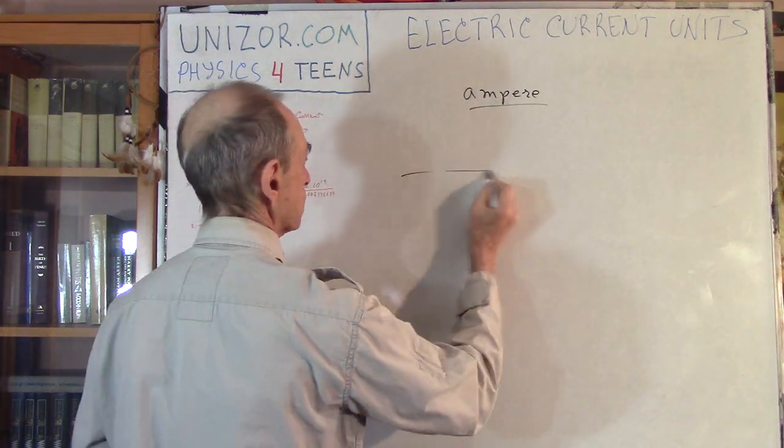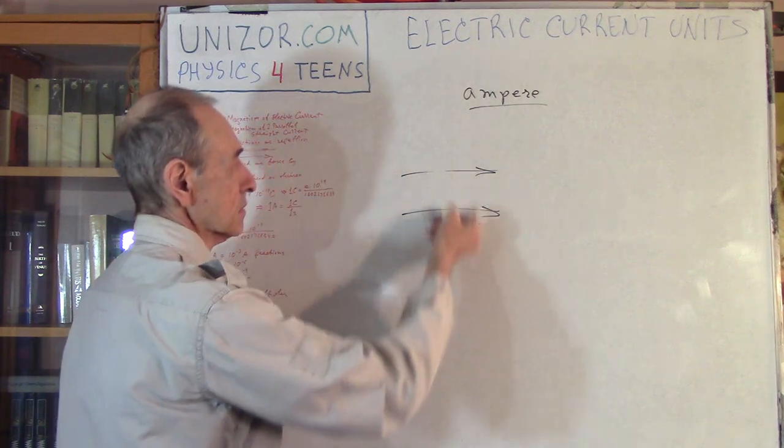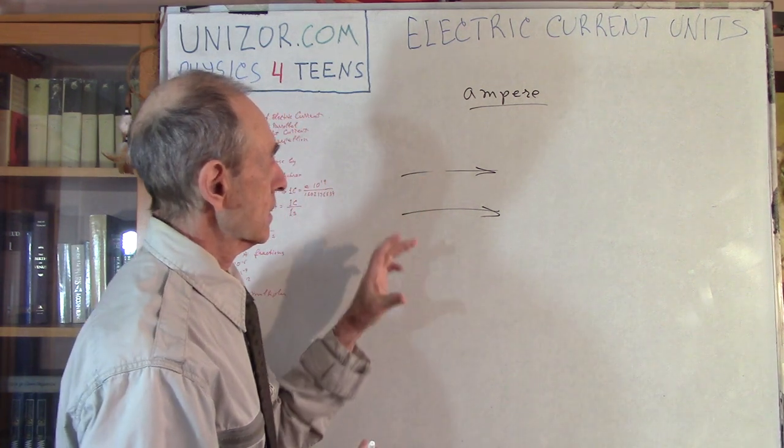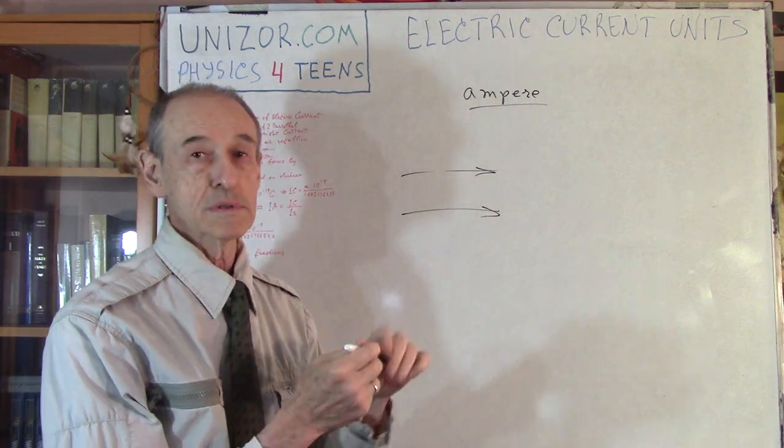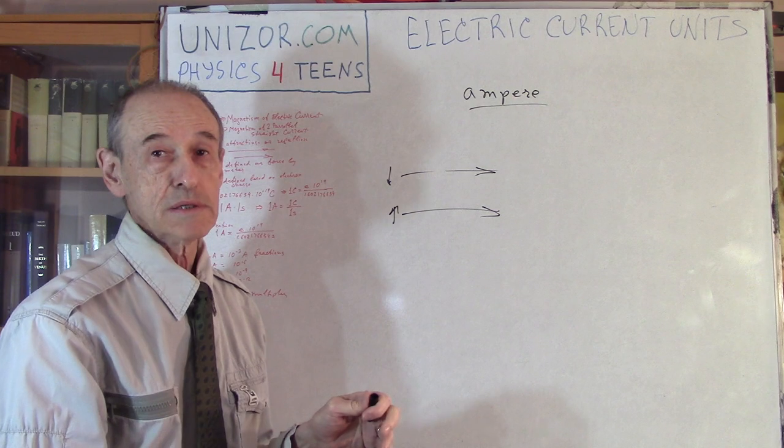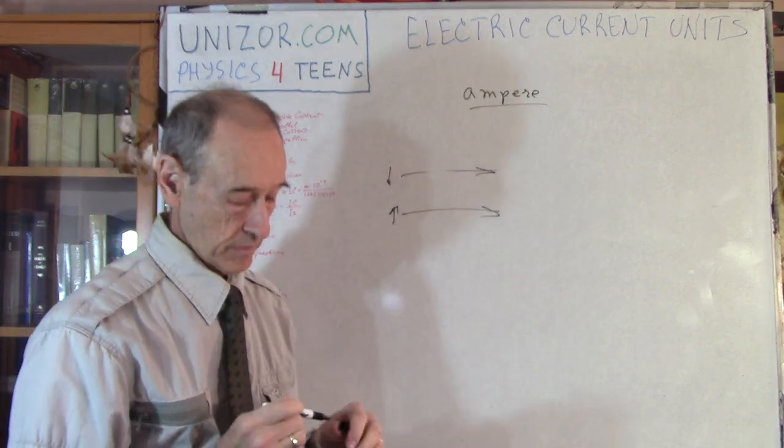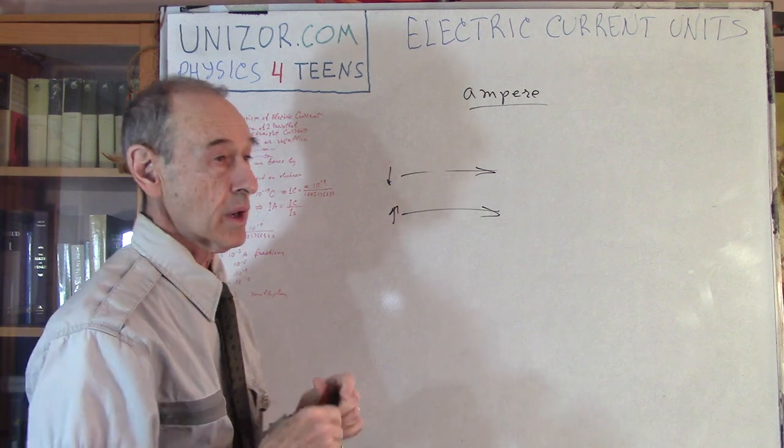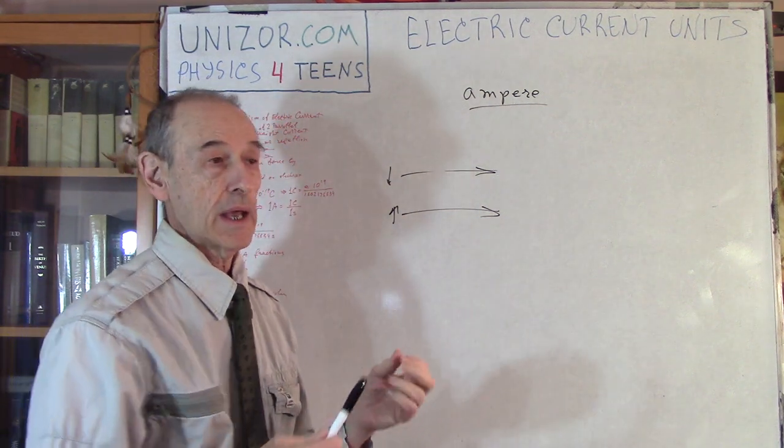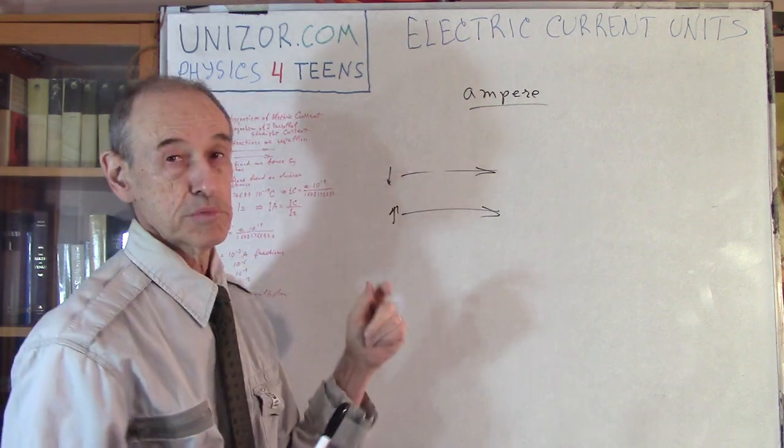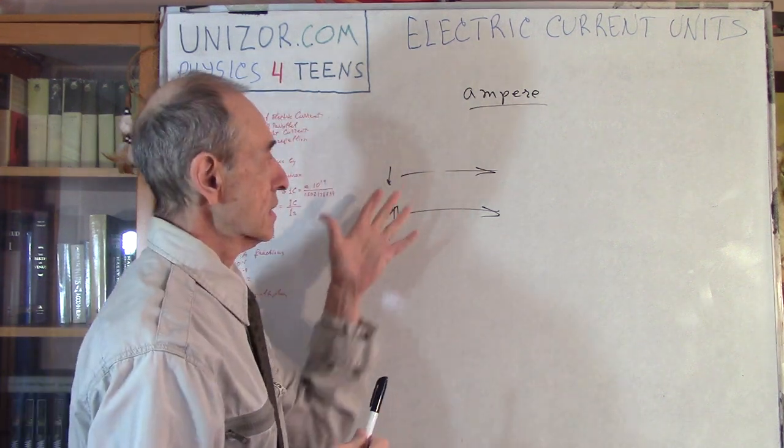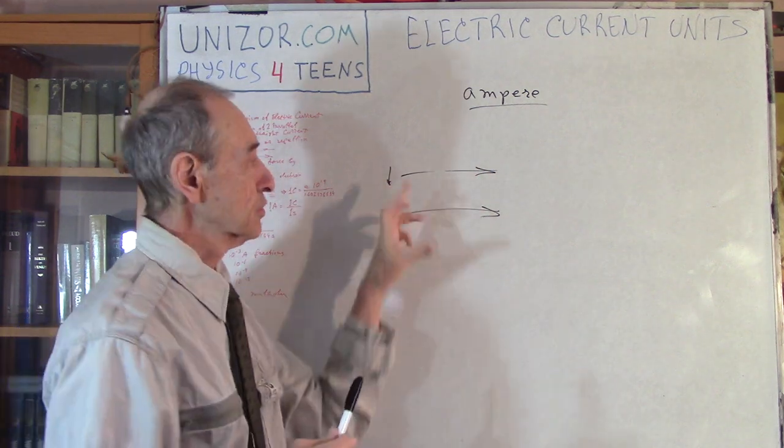If you have two parallel straight currents on certain distance from themselves, between themselves, apparently they have certain force which exists, which either attracting these two wires together if they are in the same direction, or repelling if they are in the opposite direction. This force can be measured, and it depends on the distance between the wires and how strong the electric current is. So basically, the ampere could have been defined using this machinery.